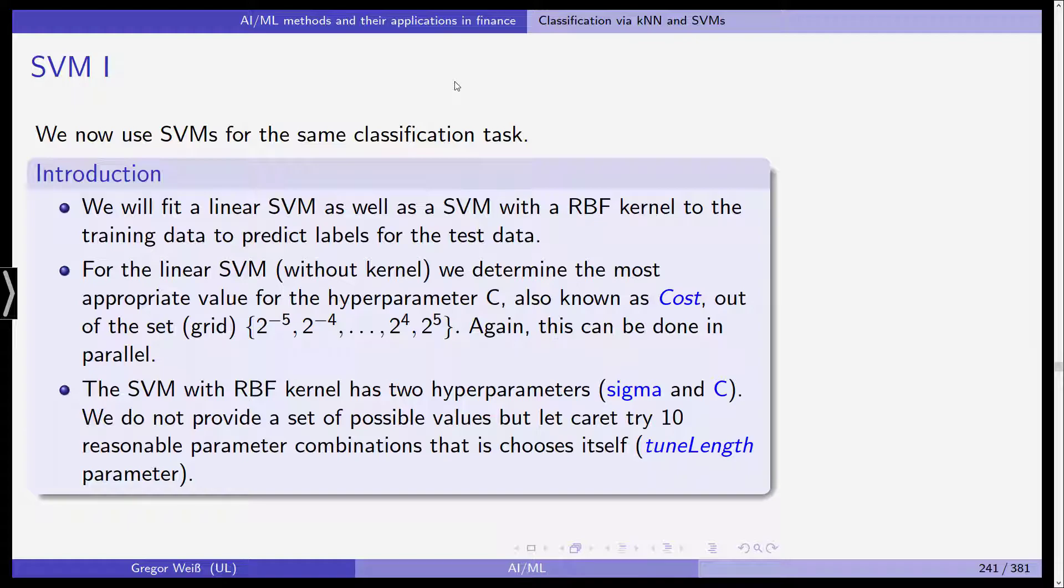For the linear support vector machine, that is without a kernel or actually the linear kernel, we determine the most appropriate value for the hyperparameter C, which is also known as cost, out of the set or grid 2 taken to the power of minus 5, to the power of minus 4, and so on. Again, as we've seen in the last video for the k-nearest neighbor model, this can be done in parallel to speed up computation time.